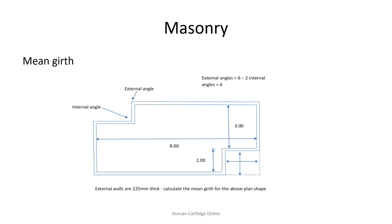Not all mean girth calculations are as straightforward as the previous example, and at first sight this example may seem to be much more complicated. But look again. The first step is to calculate the net number of external angles. In this case, there are 6 external angles, but there are also 2 internal angles. The number of internal angles are set off against the number of external angles, giving a net number of 4 in this case.